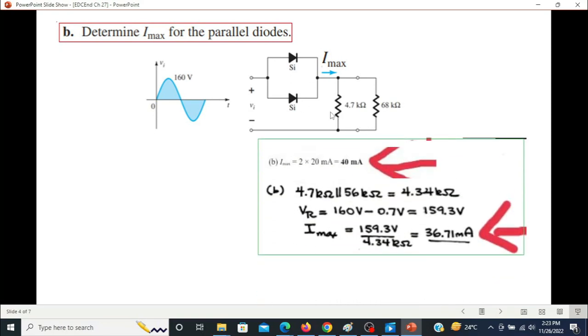He has pointed out two solutions from two different solution manuals. In one case the answer is given to be 40 milliampere, and in the other case the answer is 36.71 milliampere. The end of chapter answer is also given as 40 milliampere. But I think the 40 milliampere answer is wrong because the question is asking I max.